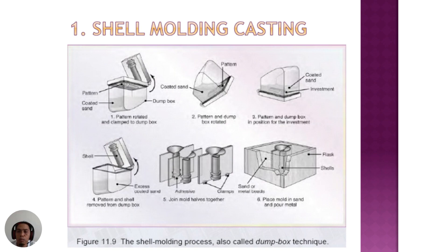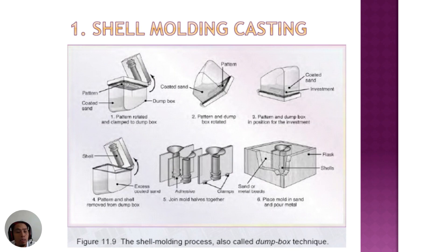This is the second method in expandable mold type casting, which is known as shell molding casting, as shown in the figure. The process starts from the upper left figure where the coated sand is filled up in the dump box and closed by the heated pattern. The dump box then rotates to distribute the coated sand on the surface of the pattern. When the coated sand is exposed to the heat from the pattern surface, it bonds together, creating the shell mold. The shell is then removed from the dump box, combined with the other half of the shell to create the mold cavity, before it is ready for the pouring process.